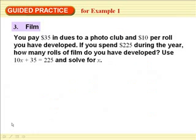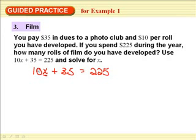Let me get rid of that. There's the subtracting. There's the dividing. 17. Okay, film. You pay $35 in dues to a photo club and $10 per roll you have developed. If you spend $225 during the year, how many a roll of films have you developed? Ooh, look, they're nice to us. They already give us the equation, so we have to solve. So here we find this side. You rewrite the equation. Everybody, 10x plus 35 equals 225.